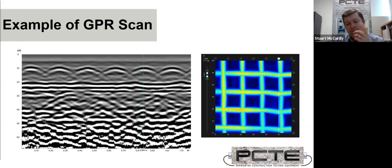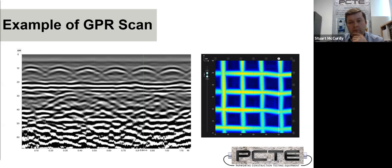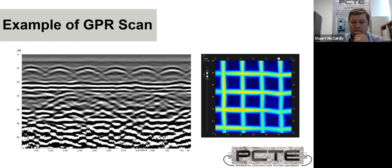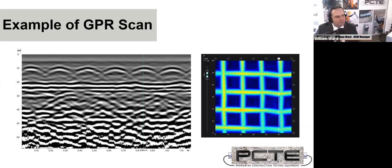Matt asked if steel fiber affects the scan. Yes, it does. Both GPR and cover meter will not be effective for steel fiber reinforced concrete. You have to look at an ultrasonic technique such as an array — specifically, ultrasonic pulse echo tomography, which is a shear wave technique. We'll stay with the electromagnetic techniques for the moment.